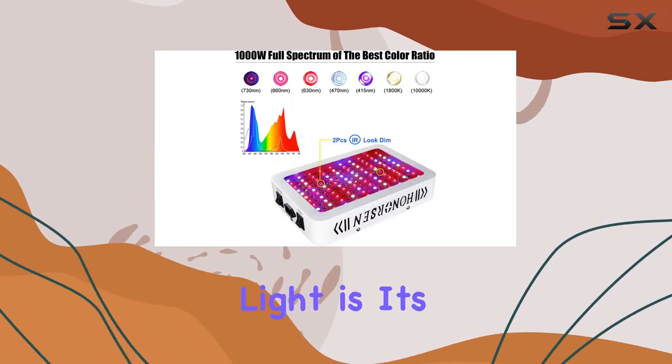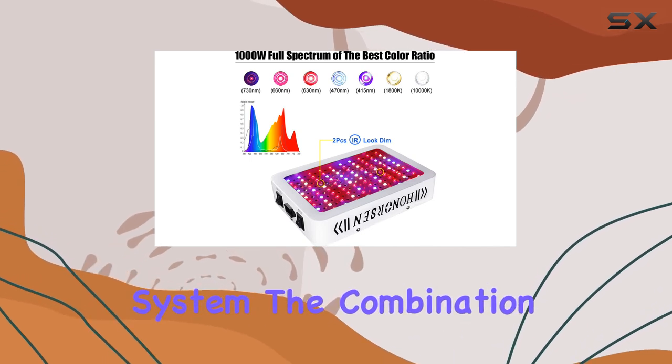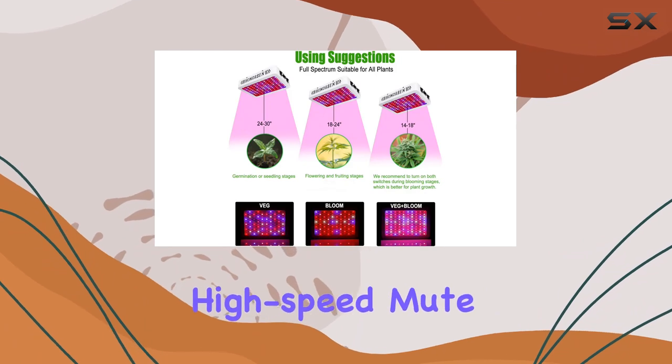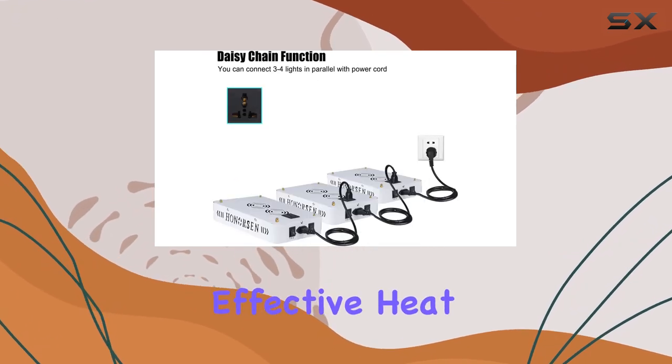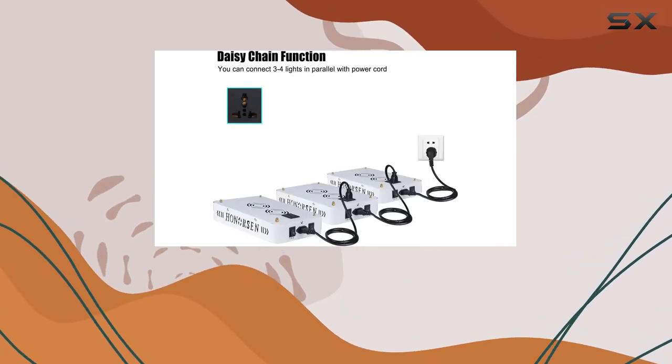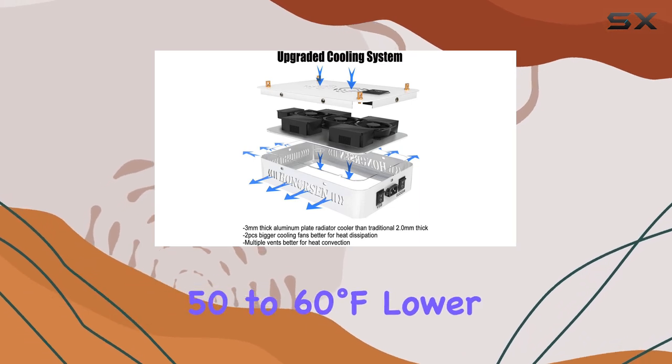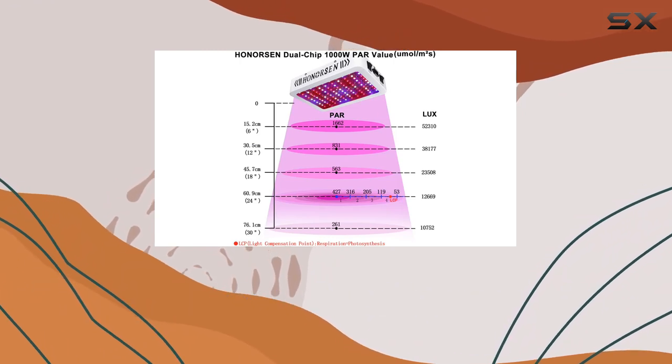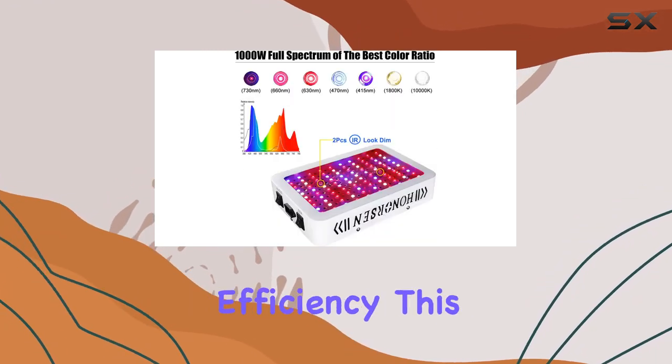One of the key features of this grow light is its powerful cooling system. The combination of a thicker aluminum plate radiator and high-speed mute fans ensures effective heat dissipation. This system helps keep the temperature 50 to 60 degrees Fahrenheit lower than other LED lights, which can significantly extend the lifespan of the lamp.